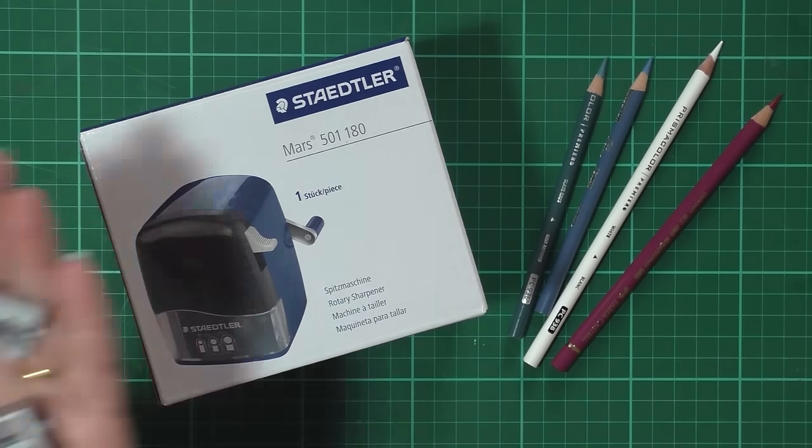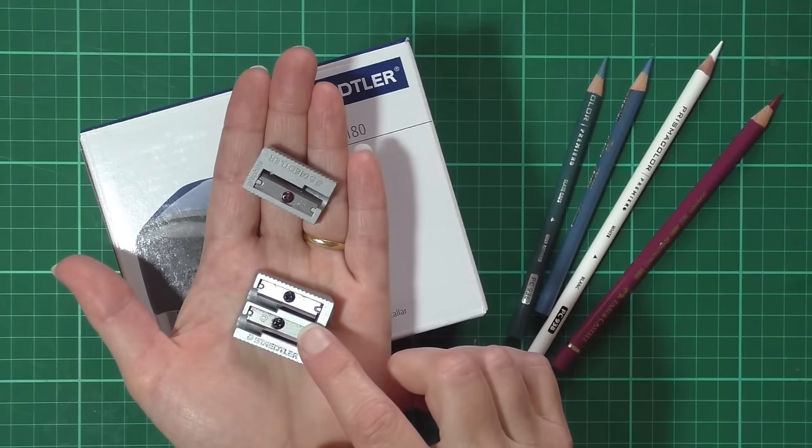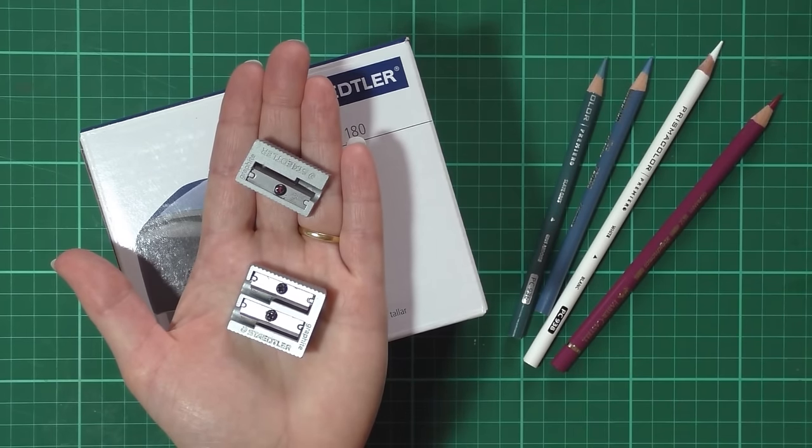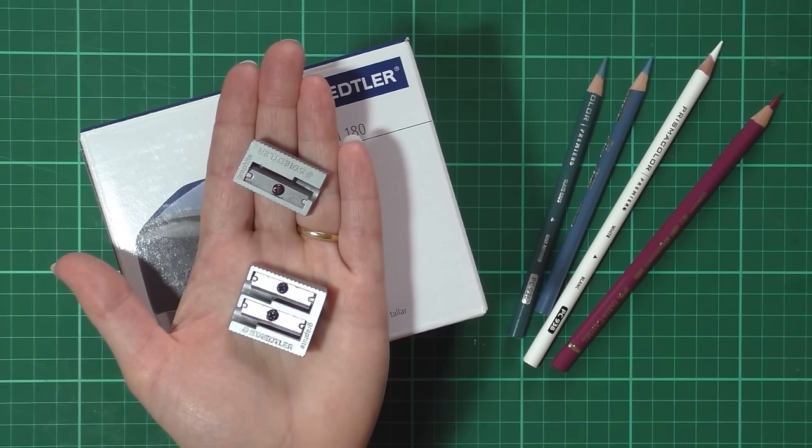As you know, in the past I've used these little metal Staedtler pencil sharpeners. They're quite good, except after a while the blades tend to go dull, which means they catch on the cores and snap them, particularly with softer pencils such as the Prismacolors.